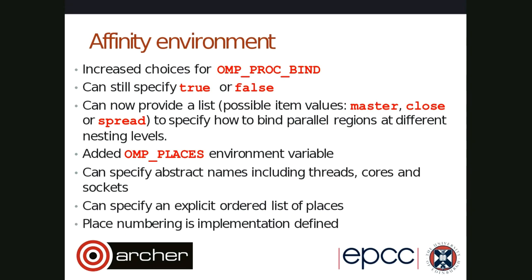The way this works is you have more choices for the OMP_PROC_BIND environment variable. Previously you could just say true or false. But now you can provide a list with values: master, close, or spread, to specify how to bind parallel regions of different nesting levels. You also have a way of describing your hardware through the OMP_PLACES environment variable. You can specify abstract names like threads, cores, or sockets — those are implementation defined — or you can specify an explicit ordered list of places.